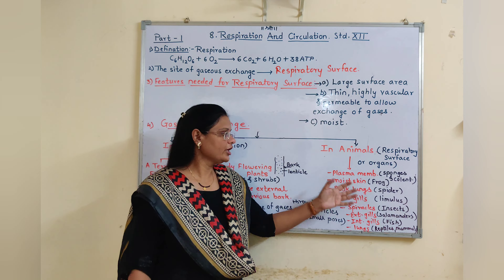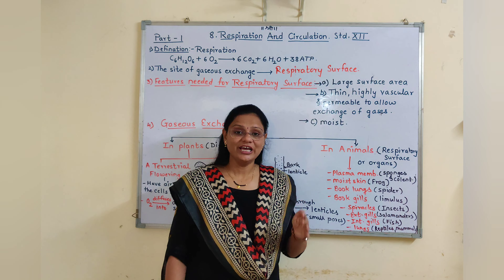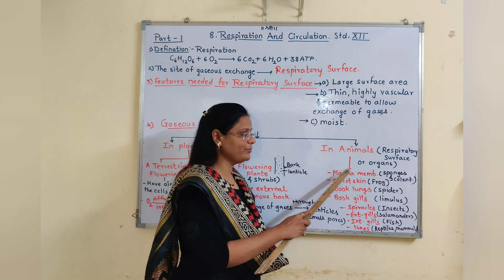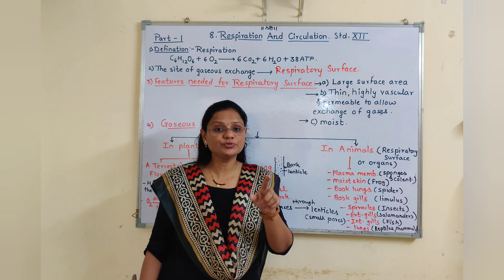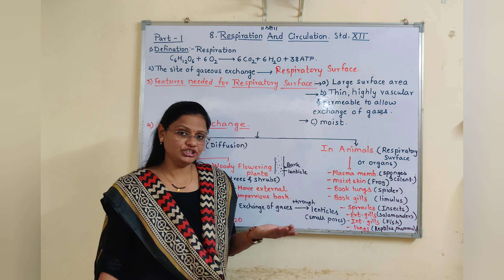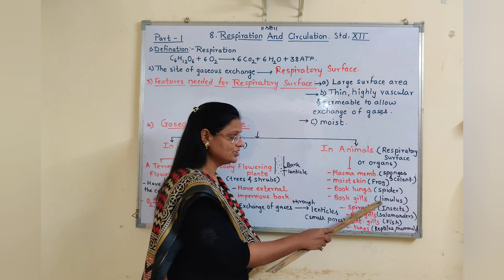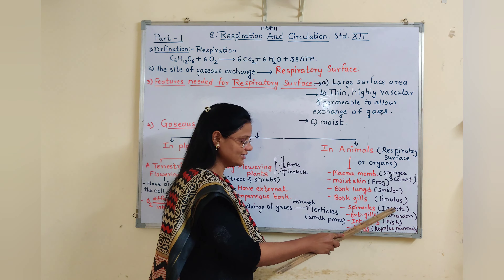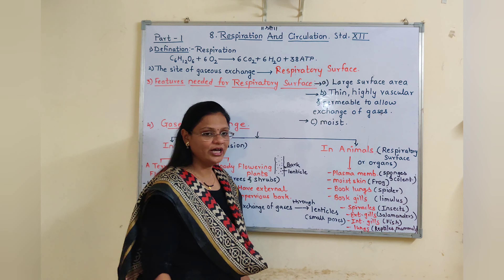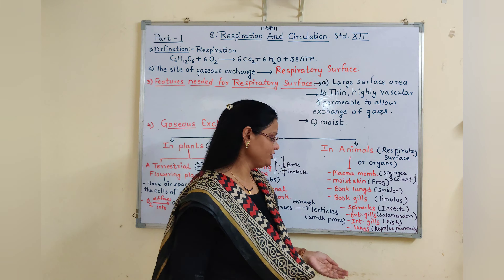Now moving towards animals — animals have different organs or surfaces for gaseous exchange. Exchange takes place through the plasma membrane in sponges and coelenterates; through moist skin in frogs; through book lungs in spiders; through spiracles in insects; through external gills in salamanders; through internal gills in fishes; and through lungs in reptiles, mammals, and birds.